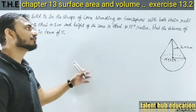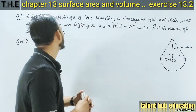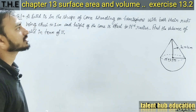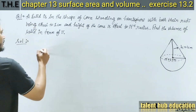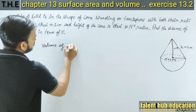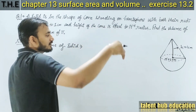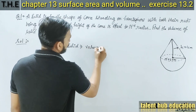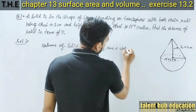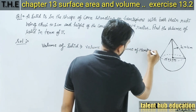Pi के term में इसका volume find करना है। यहां पर आपको दो shape दिखाई दे रहे हैं। A solid is in the shape of cone standing on a hemisphere। तो यहां पर total volume निकालने के लिए: Volume of cone plus volume of hemisphere।